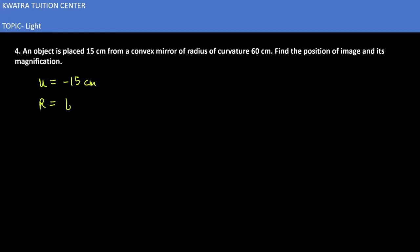Radius of curvature is 60 cm. And 60 cm is equal to 2f. So f in this case is 30 cm. And what is our mirror formula?